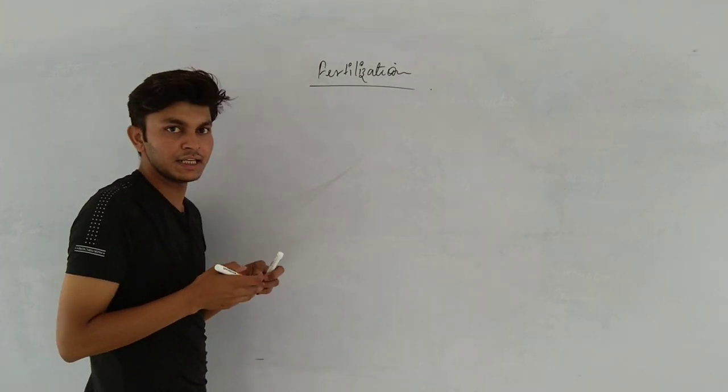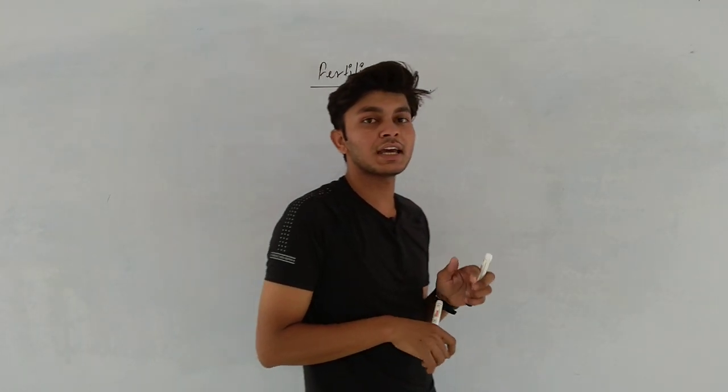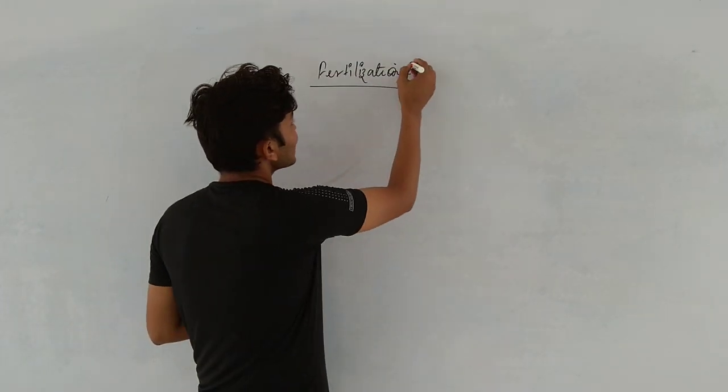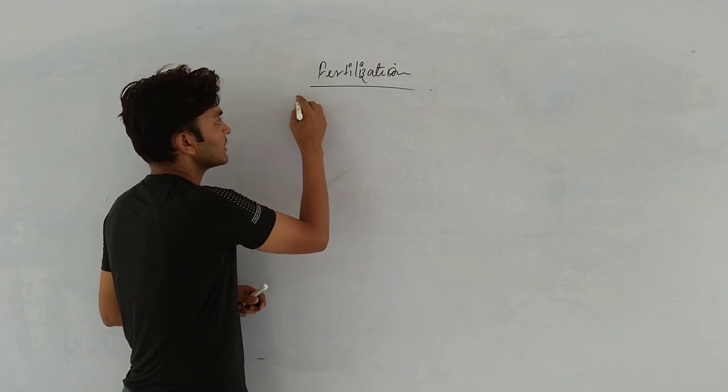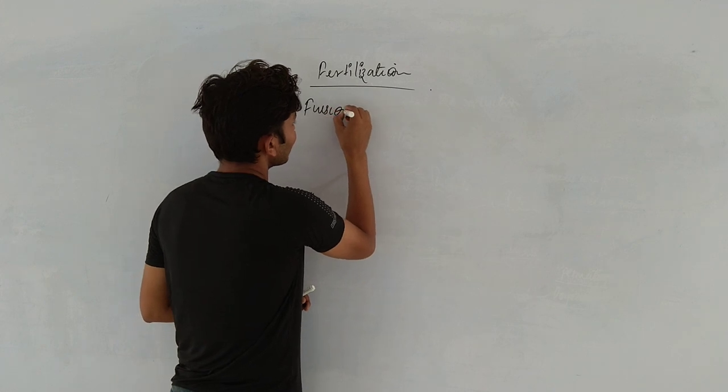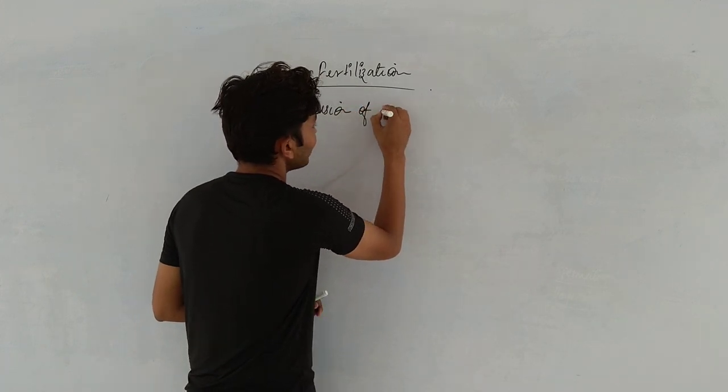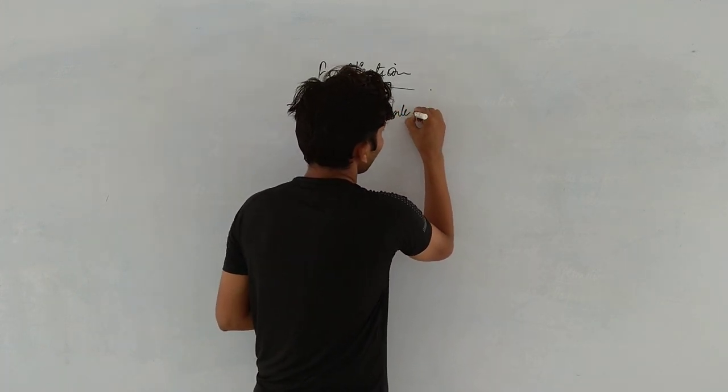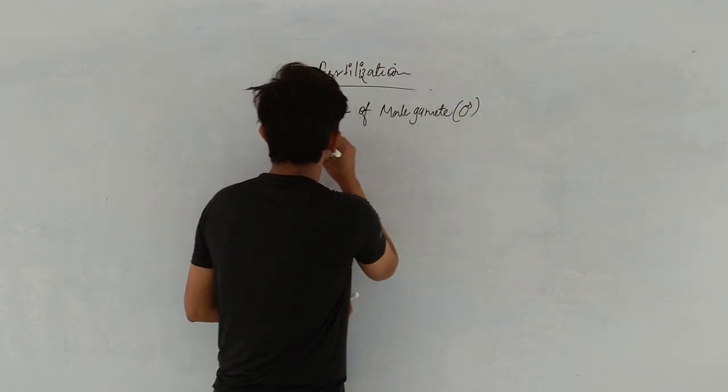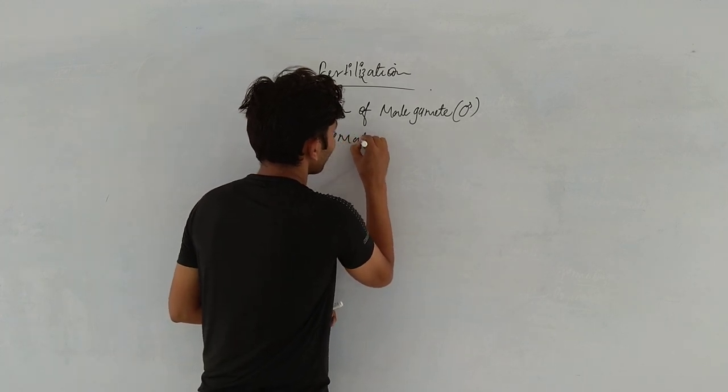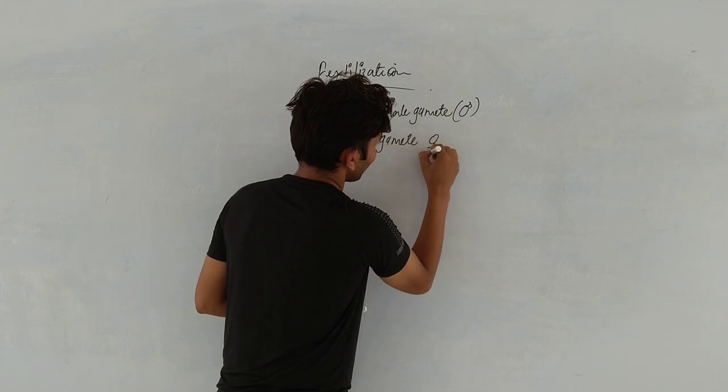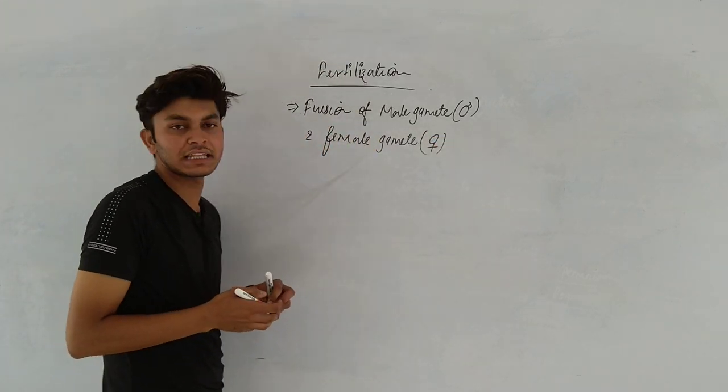What is fertilization? Where does it take place? Fertilization means fusion of male and female gametes. Generally, fusion of male gamete and female gamete is known as fertilization.